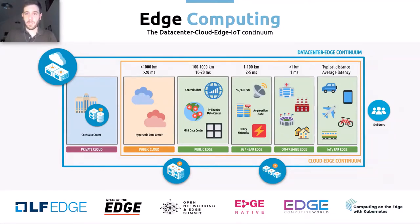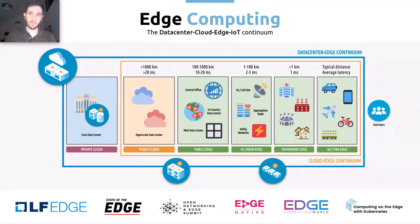For some people it might mean what we know as the far edge — something on board a train or a plane, actually moving around. For others, looking from the data center, the edge from their perspective could be simply some resources on a utility network or a mini local data center in specific locations where they need to deploy some workloads. The on-premise edge is also gaining more relevance nowadays, with small amounts of infrastructure resources deployed on-premise by a service provider or the owner of those premises.